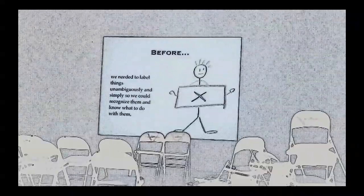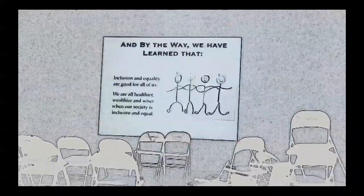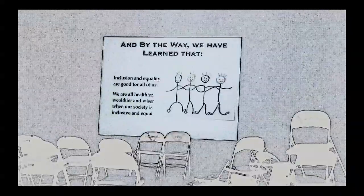Before, we needed to label things unambiguously and simply so we could recognize them and know what to do with them. Now we can see a description of each person or thing that is useful and relevant to our purpose.